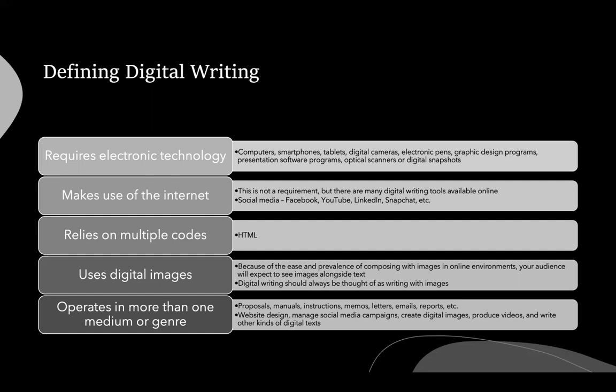Digital writing also operates in more than one medium or genre. You can think about more traditional types of writing like proposals, manuals, instructions, memos, letters, emails, and reports, but you also have to think about website design, managing social media campaigns, creating digital images, producing videos, and writing other kinds of digital texts. There are lots of different mediums or genres when we're talking about digital writing.